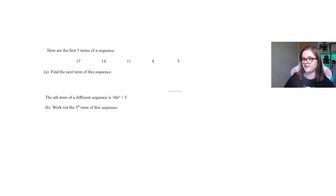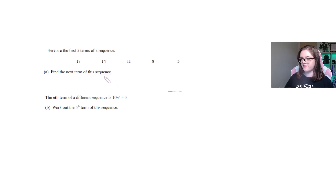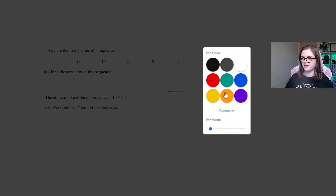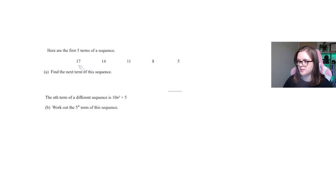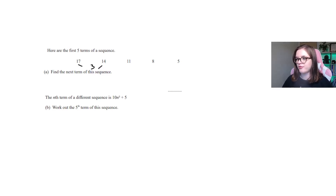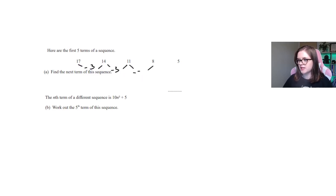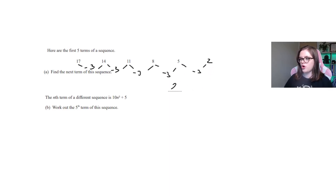First question: here are the first five terms of a sequence — 17, 14, 11, 8 and 5. Find the next term of this sequence. First, let's figure out the difference. Between 17 and 14, that's 3. Between 14 and 11, also 3. We're taking 3 away each time — minus 3, minus 3, minus 3. So take 3 away from 5, you land on 2.